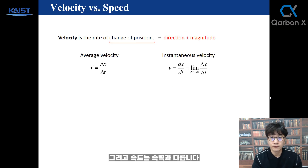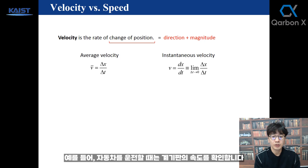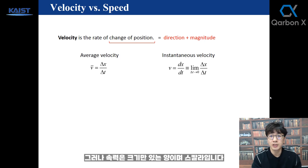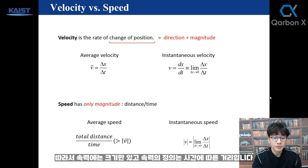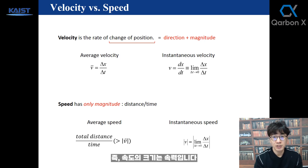Velocity is different from speed. In everyday life, we use speed — for example, when you drive a car, you look at the speedometer. That's speed, not velocity. Velocity is a vector: it has both magnitude and direction. Speed is a scalar — it only has magnitude. The definition of speed is distance over time. The magnitude of velocity is speed.